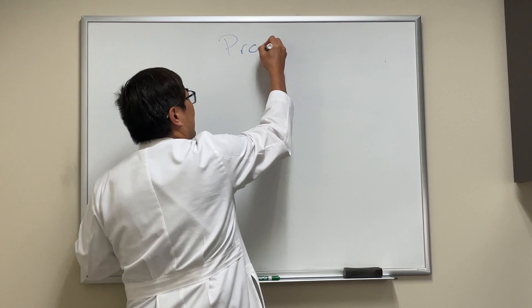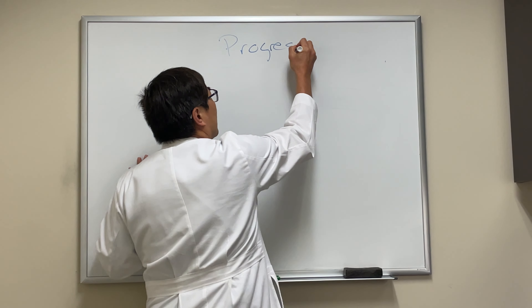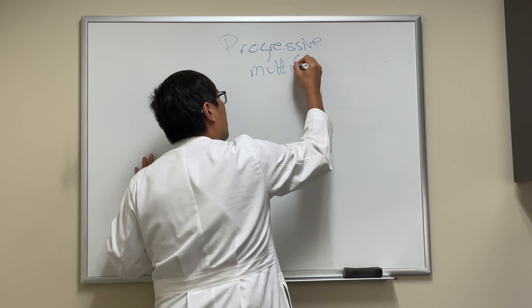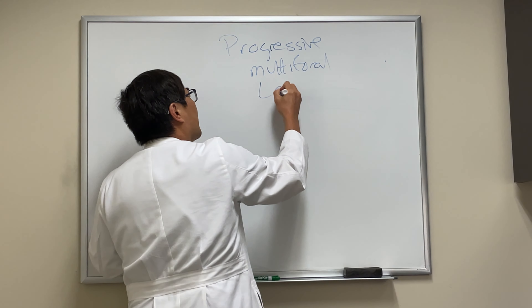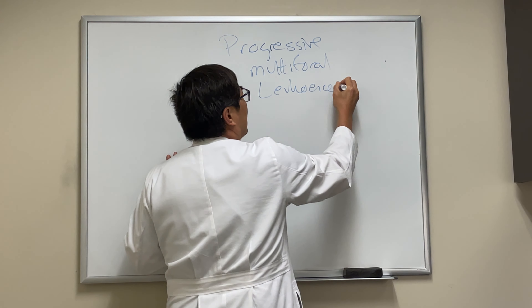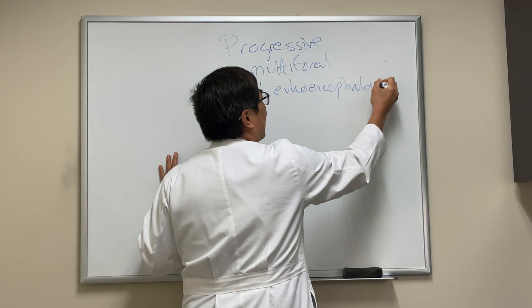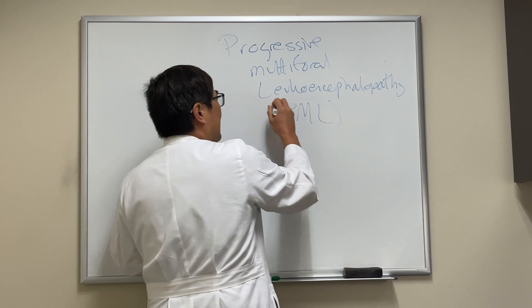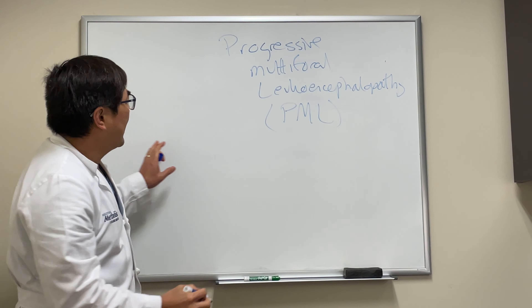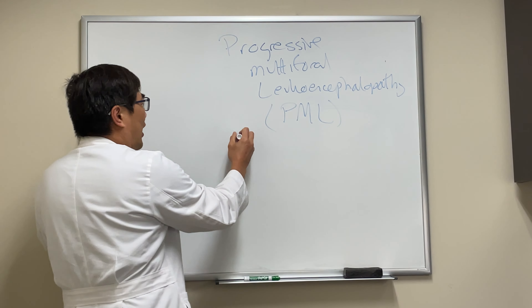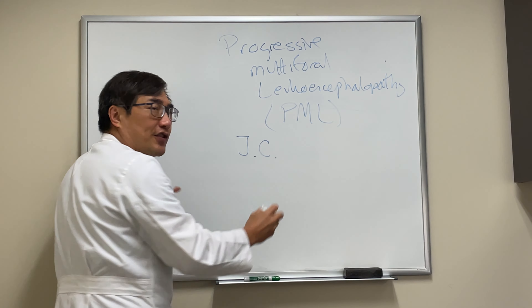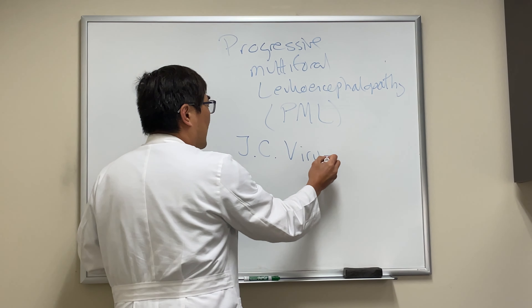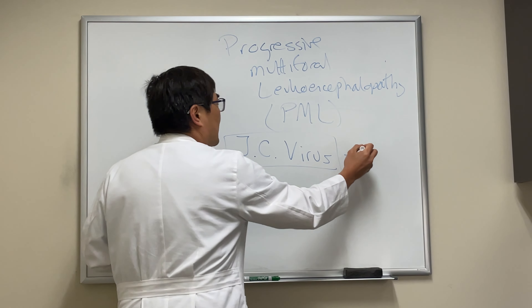We're going to talk about progressive multifocal leukoencephalopathy, sometimes abbreviated as PML. PML is an infectious disorder due to the John Cunningham virus — named for the patient — so the JC virus causes PML.